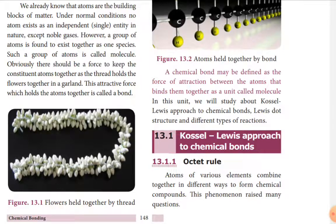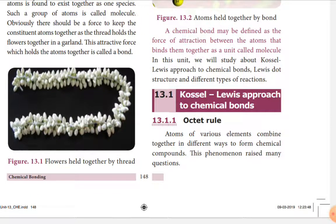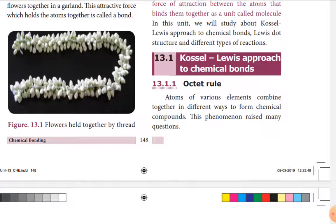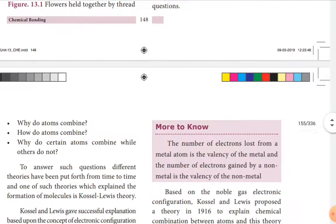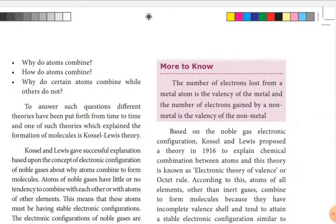In this unit we will study the Kossel-Lewis approach to chemical bonding, Lewis dot structure, and different types of reactions. The first topic is the octet rule. Atoms of various elements combine together in different ways to form chemical compounds. This raises many questions: why do atoms combine? How do atoms combine? Why do certain atoms combine while others do not? For example, hydrogen atoms combine with another hydrogen atom to form a hydrogen molecule.